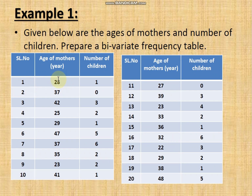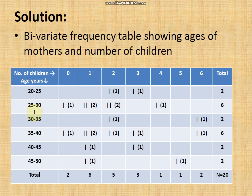The first observation: age of the mother is 28 and she has one child. Age 28 falls in the 25–30 class interval. Number of children is 1. The common cell where the row for 25–30 and the column for 1 intersect is identified, and one tally mark is placed there.